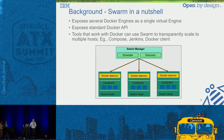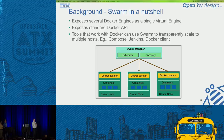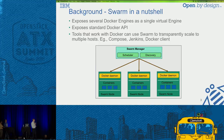Looking at this simple architectural chart: there is a Swarm manager component that connects to a number of Swarm nodes, where each one is running the Docker engine. The manager has two components: the scheduler, which schedules containers on different hosts based on different criteria such as scheduling constraints; and the discovery component, which provides membership information — which nodes belong to this particular cluster — to the Swarm manager. It's relatively straightforward, very simple, and very lightweight.